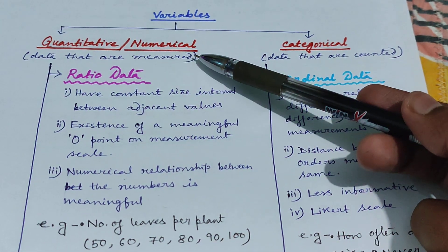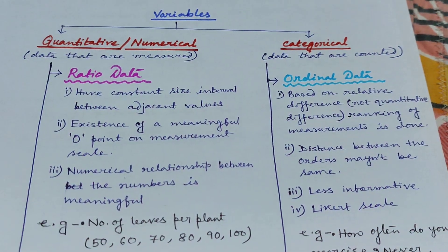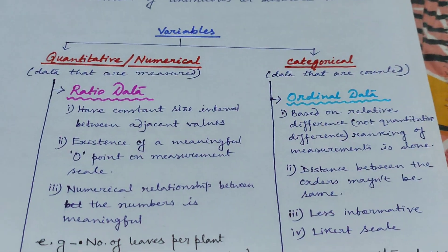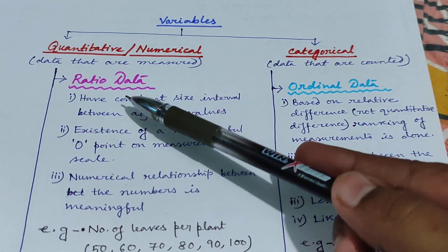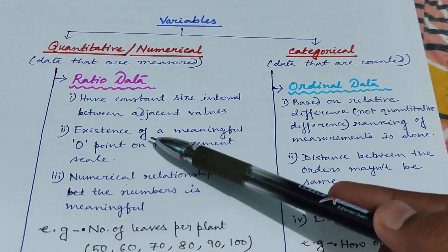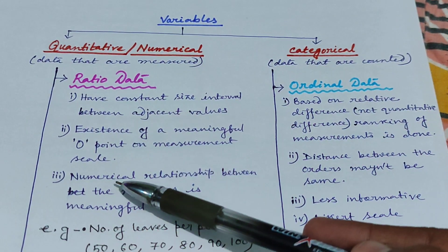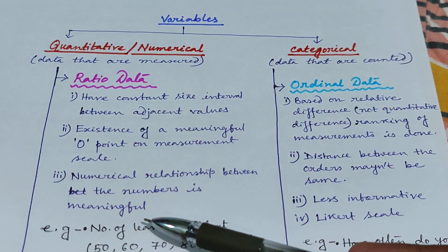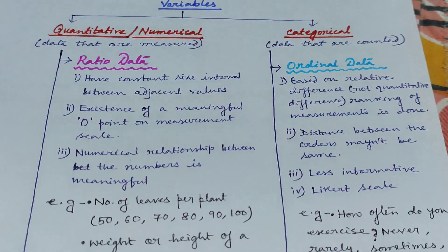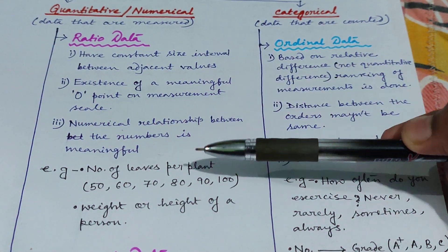Under the quantitative or numerical data, we can get two other types: ratio data and interval data. Ratio data or ratio variables have a constant size interval between adjacent values, existence of a meaningful zero point on the measurement scale, and a meaningful numerical relationship between the numbers. Let's look at examples to understand what these three statements mean.